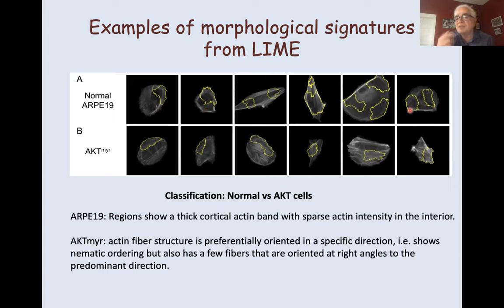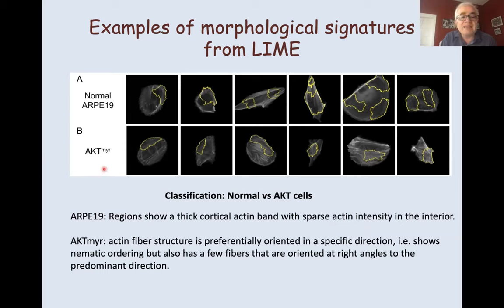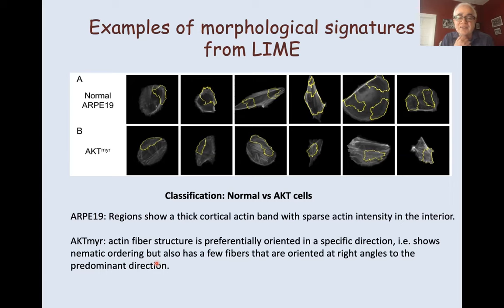In many cases we couldn't interpret LIME because it picked up the whole cell or almost the whole cell. But there were a number of cases where it highlighted subcellular features. This is all unpublished work — we have a paper submitted for publication, so hopefully you'll be able to read it soon. In one example, when looking at the classification of normal versus AKT cells, LIME highlights certain areas outlined in yellow. In the normal ARPE-19 cells, these regions show a thick cortical actin band with very sparse actin intensity in the interior, while for AKT cells the actin fiber structure shows nematic ordering with some cross-cutting fibers oriented at right angles to the predominant direction.